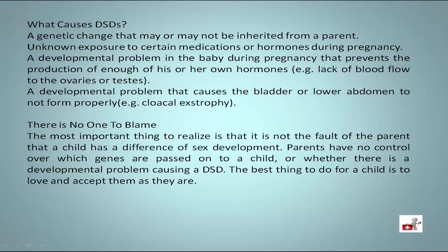There is no one to blame. The most important thing to realize is that it is not the fault of the parent that a child has a difference of sex development. Parents have no control over which genes are passed on to a child, or whether there is a developmental problem causing a DSD. The best thing to do for a child is to love and accept them as they are.